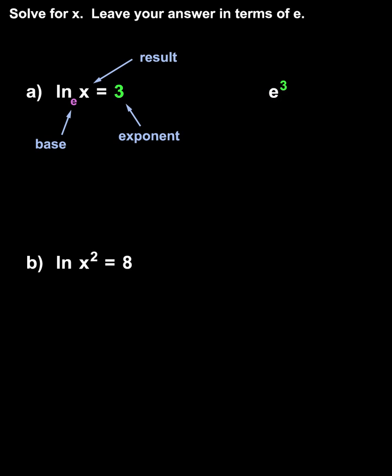So, we have e to the third equals x, and we've solved for x. Notice that our answer, e cubed, is written in terms of e, which is what the problem asks us to do.